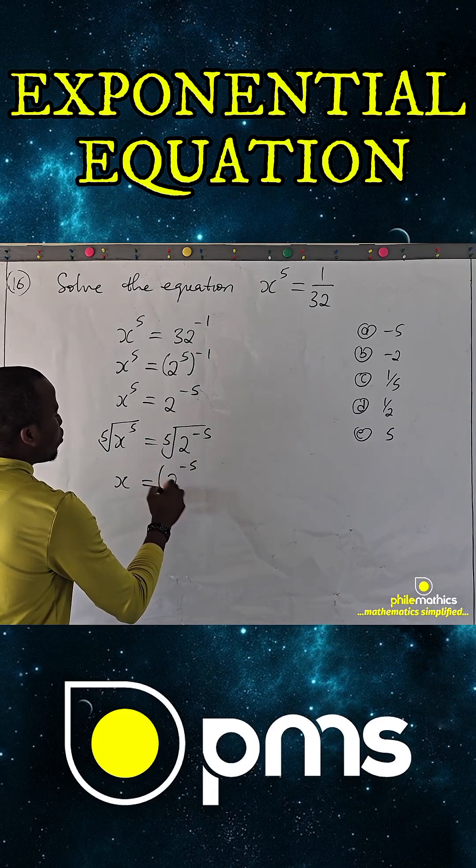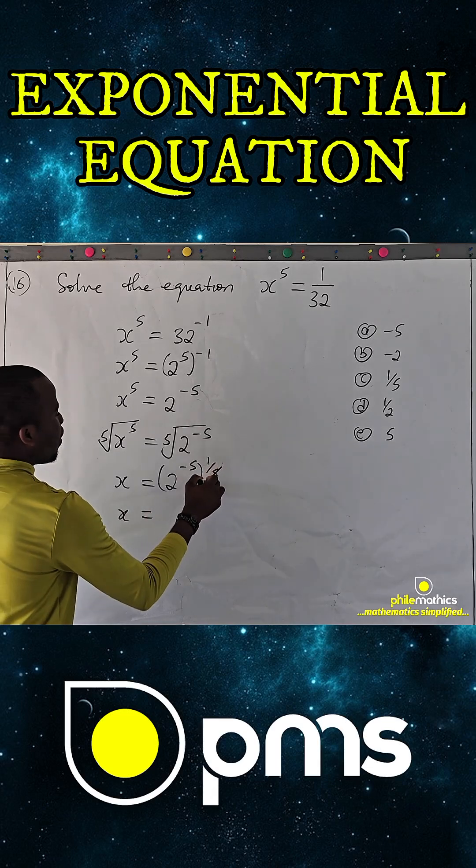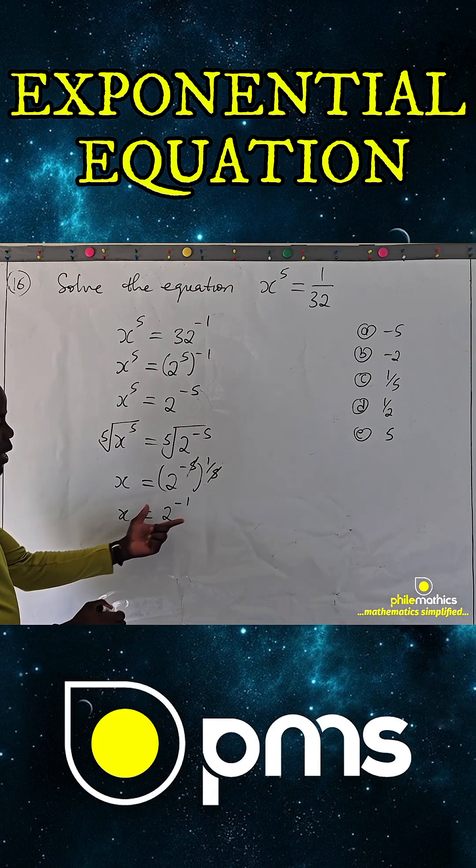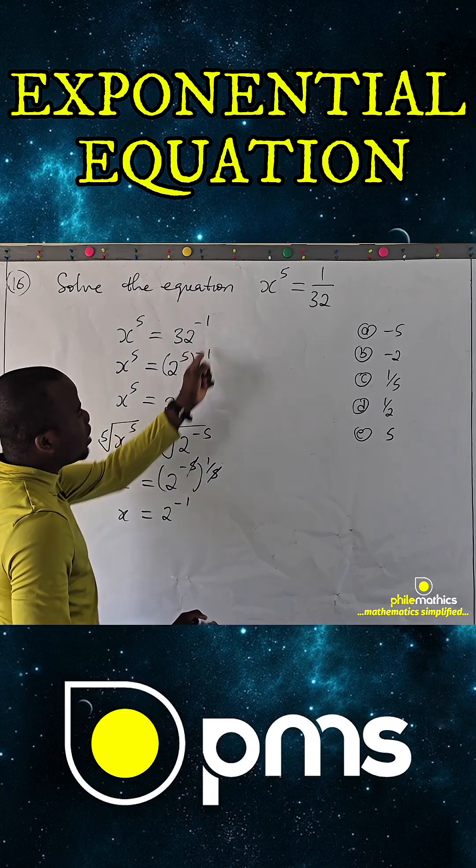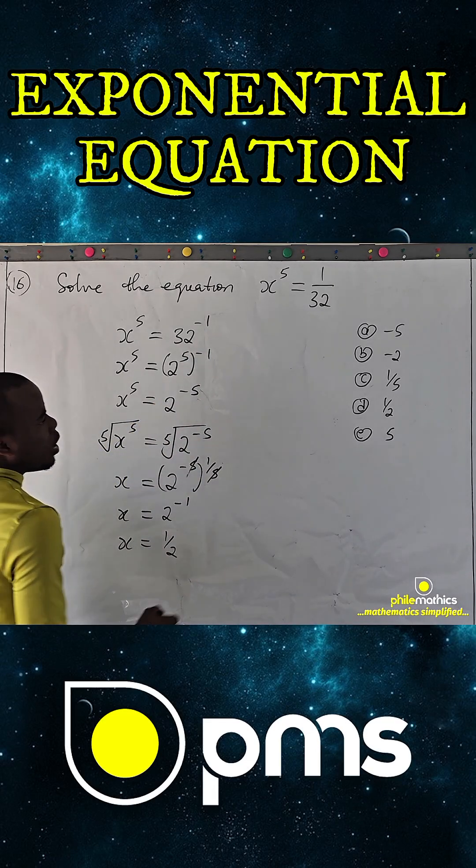And I'll have x, you know fifth root is the same as 2 to power minus 5 power 1 over 5, so that my x is, 5 can cancel, and I'm having 2 to power minus 1. And 2 to power minus 1, just what we did here, is simply 1 over 2.